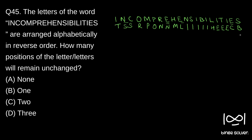So we have written it in reverse order. As you can see, the question is how many positions of the letters will remain unchanged. Going through each position: changed, changed, changed, changed, changed, changed, changed, changed, changed, changed, changed — unchanged — changed, changed, changed, changed. So there are only 2 letters whose positions remain unchanged. These two combinations go unchanged. So the answer will be C — solution to question 45 is C, 2.